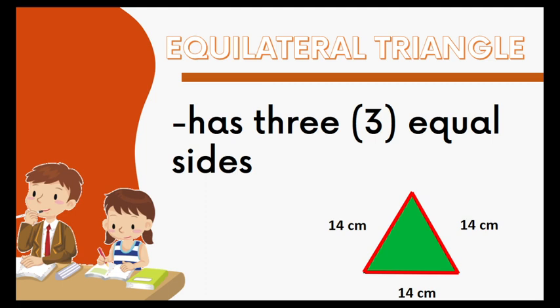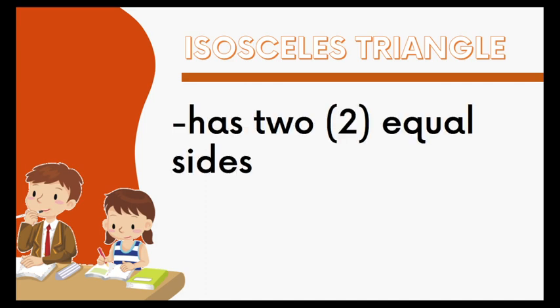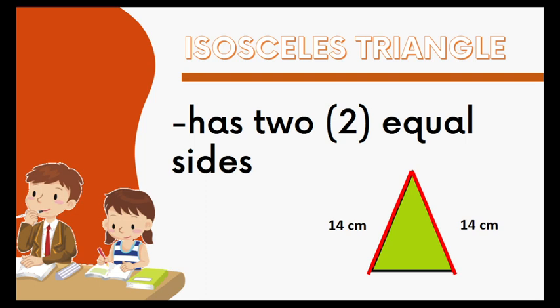The second triangle according to its sides is an isosceles triangle. An isosceles triangle has two equal sides. This is an example of an isosceles triangle. The first two sides are equal — they both have 14 cm — while the third side is 8 cm. This is an isosceles triangle because only two sides are equal.